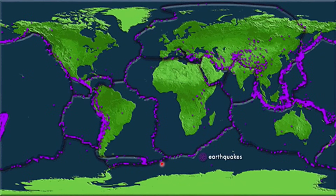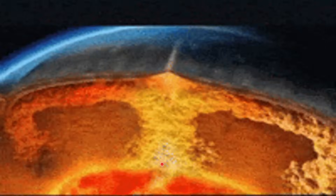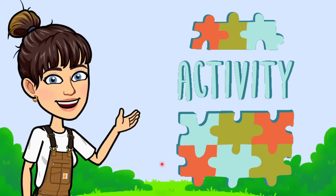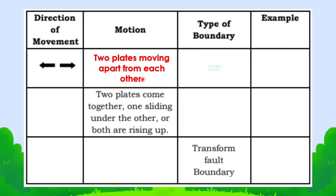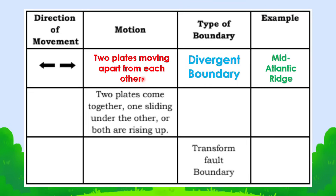Now let's have an activity to see if you really understand our lesson for today. Help me complete this table. The direction of motion of the plates is away from each other — this is what we call divergent. An example of this is the Mid-Atlantic Ridge, where the Eurasian plate and the North American plate are moving apart.